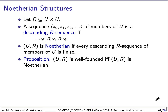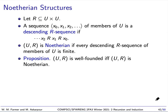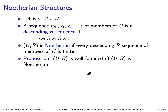We talked a little bit before about a relation being Noetherian. We can now talk about a Noetherian structure. Let R be a binary relation on U. A sequence of members of U is a descending sequence if X1 is related to X0, X2 is related to X1, and so forth. The structure U, R is Noetherian if every descending sequence of members is finite. And we have this nice proposition: a structure is well-founded if and only if it is Noetherian. So Noetherian and well-founded say the same thing in different ways.